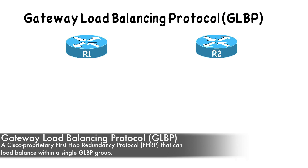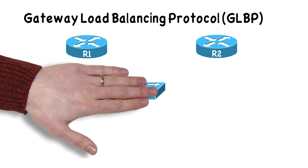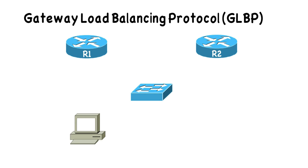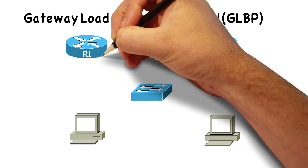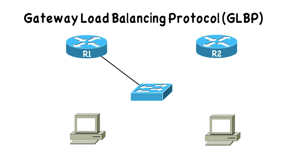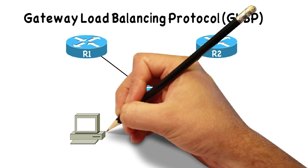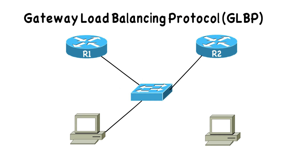Think about HSRP. With HSRP, we had an active router and a standby router. The active router was actively forwarding traffic, but the standby router was not — it was just sitting around waiting for the active router to fail. If we did want to use that router, we could do some manual load balancing: have traffic for one VLAN treat the standby router as the active for that VLAN, and another VLAN use the other router. But that was administrative overhead — we had to manually configure load balancing.